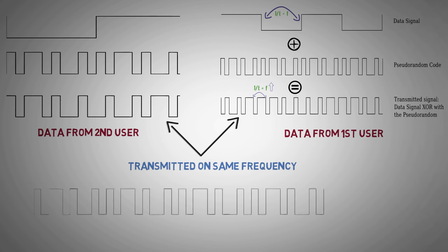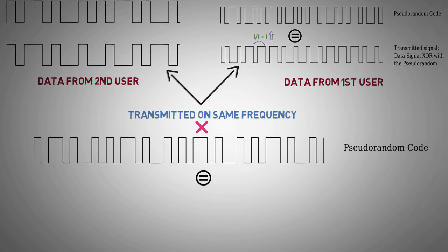In order to retrieve the signal, the receiver must have the same spreading sequence, which is multiplied to this composite signal in a process called de-spreading. This makes CDMA very secure and robust.